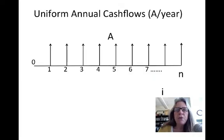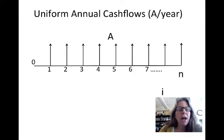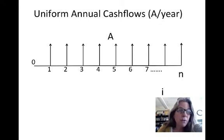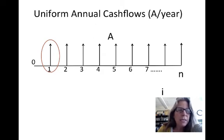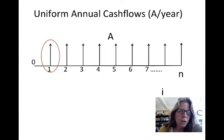The first pattern is uniform annual cash flows, where there's an equal payment occurring every year for N number of years. This is quite useful in personal finance calculations. An important thing to remember is that the first cash flow occurs in year one and continues until year N — it does not occur at time period zero; it happens at the end of the first year.